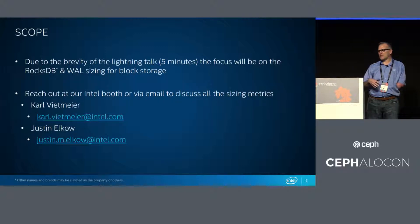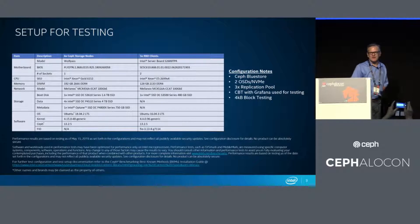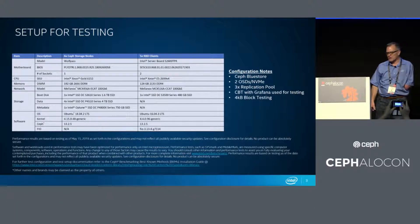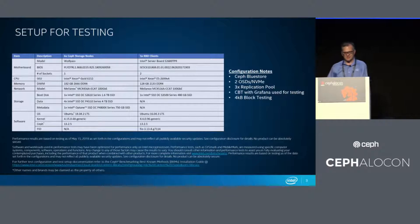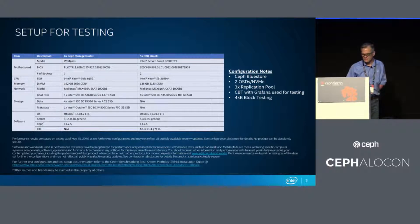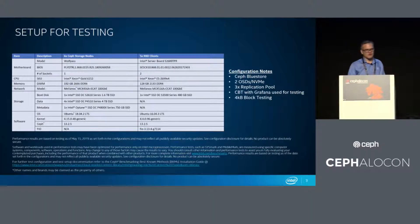We already had some benchmark servers and benchmark clusters set up, so we took one of those existing clusters. It's a pretty standard benchmarking configuration — one generation older, so you'll notice Broadwell processors, but it is using our 4500s and Optane for the WAL and DB. It's Bluestore, two OSDs per NVMe drive, 3x replication. We used CBT and Grafana, so the graphs are from Grafana. We used 4KB to start but tested a range of IO sizes, and it's running Mimic.